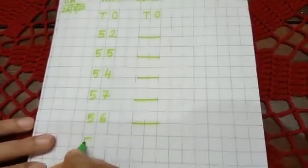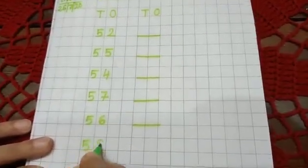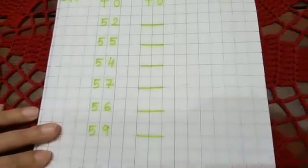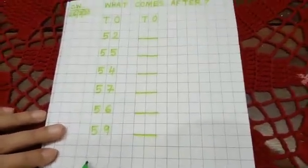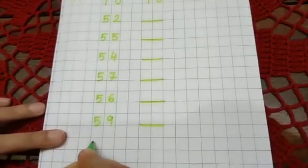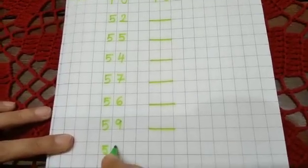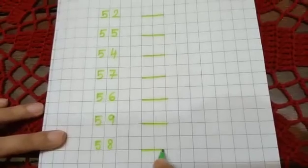Again here you write five, nine—fifty-nine dash. Again here you will write five, eight—fifty-eight dash.